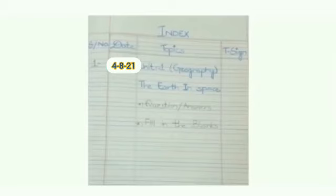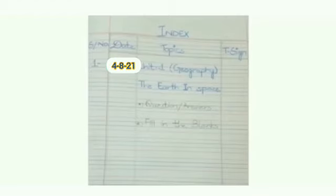For the index, first you have to write down the heading with blue color pencil: index, serial number, then date, then topic, then teacher sign. Then write the number one, then date, then Unit 1 Geography — The Earth in Space — Question Answers and Filling the Blanks.